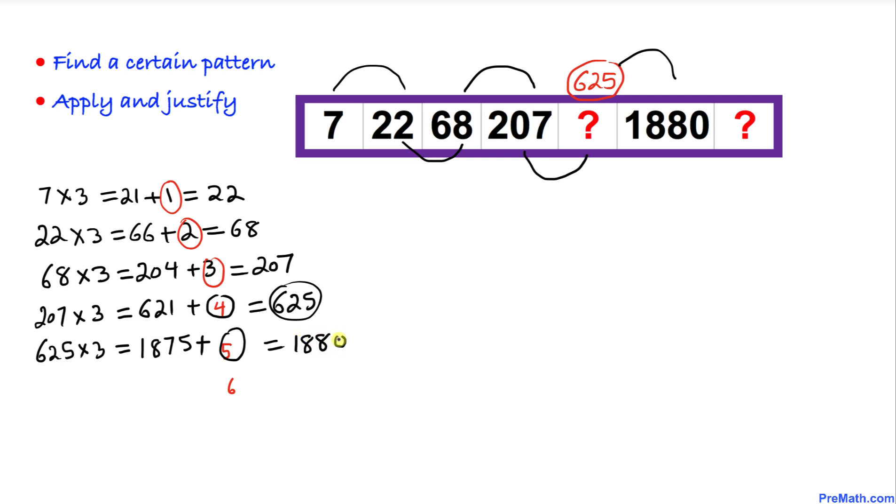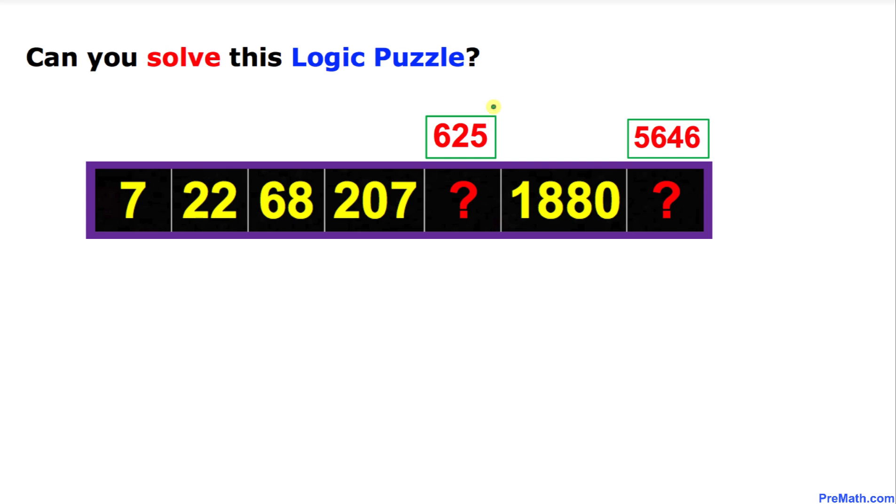All right, and then next we are going to do the same thing. 1880 times 3 is going to give us 5640, and then plus 6 is going to make 5646. So that means this unknown number at this spot is going to be 5646.